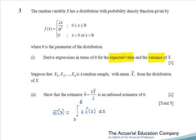In part two of the question, we're given an estimator 3x-bar over 2, and asked to show that it's an unbiased estimator. Simply, we need to find the expectation of this estimator, i.e. the expectation of 3x-bar over 2. Taking the 3 and the 2 outside, we just need to find E of x-bar, which is fairly standard stuff.